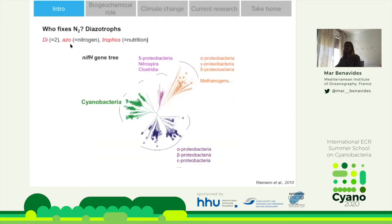We call them diastotrophs — it comes from the Greek, where 'di' means nitrogen, so literally these are the bugs that feed on nitrogen. They're quite diverse. Here is a tree of the NifH gene, which encodes for a subunit of the nitrogenase enzyme used to fix nitrogen. Cyanobacteria appear in one branch, but there is actually much wider diversity — there are other bacteria and archaea that also fix nitrogen in marine ecosystems, associated with corals or in sediments, for instance.